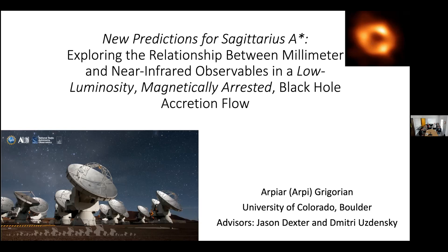We also don't know if the angular momentum of the emission region — like a disk or torus — is precisely aligned with the angular momentum of the inner object. This causes issues when we want to model Sagittarius A-star, since a lot of these parameters can lead to quite different kinds of physics and observables. But that's all good because we can still do quite a lot of modeling.